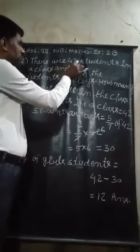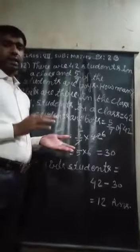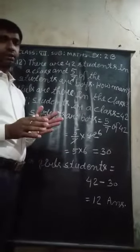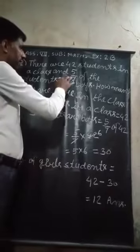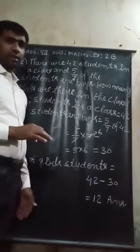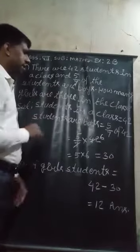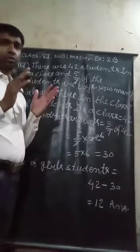there are 42 students in a class. That means in a class, there are 42 students. And 5 by 7 of the students are boys. That means 5 by 7 of total students are boys. Then how many girls are there in the class? So, total students of the classroom will be 42, and 5 by 7 students are boys. And now we have to calculate how many girls are in the classroom.